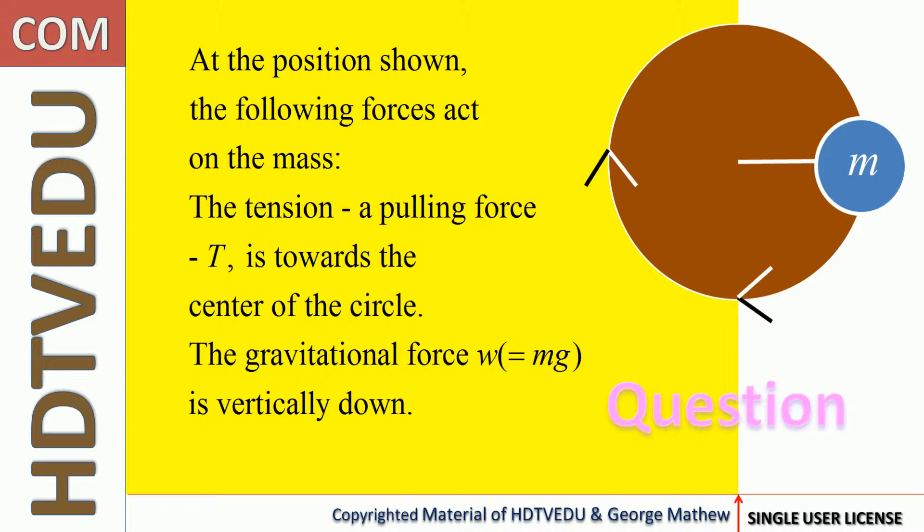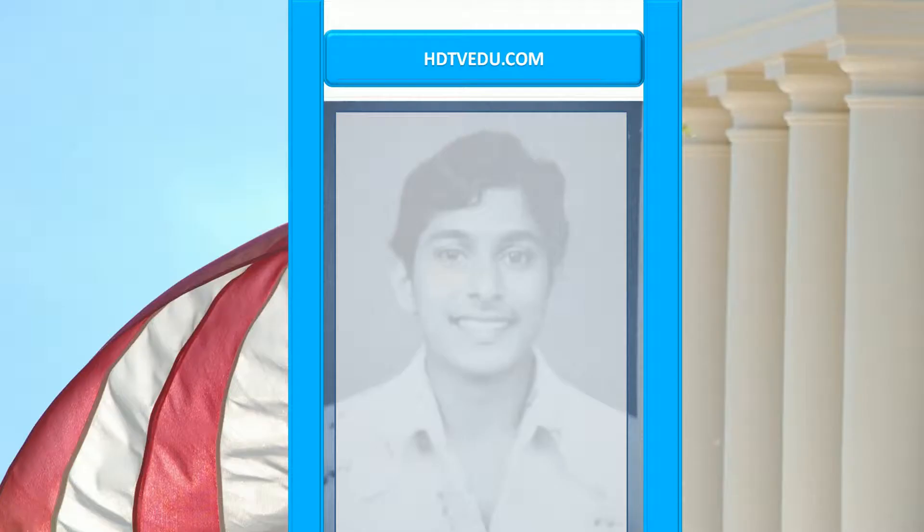At the position shown, the following forces act on the mass. The tension, a pulling force T, is towards the center of the circle, to the left. The gravitational force W equals mass times acceleration due to gravity, acting vertically down.